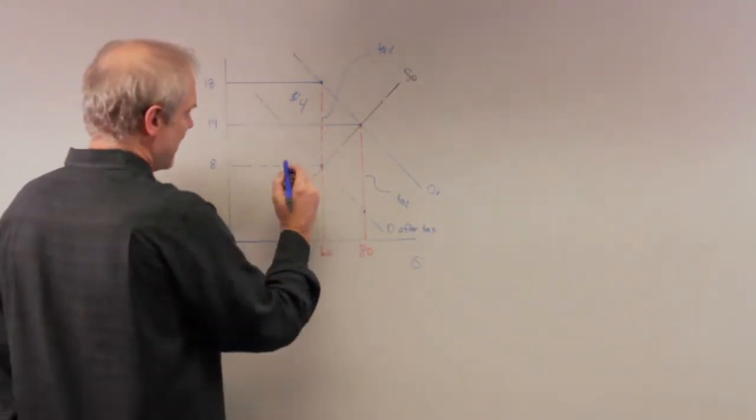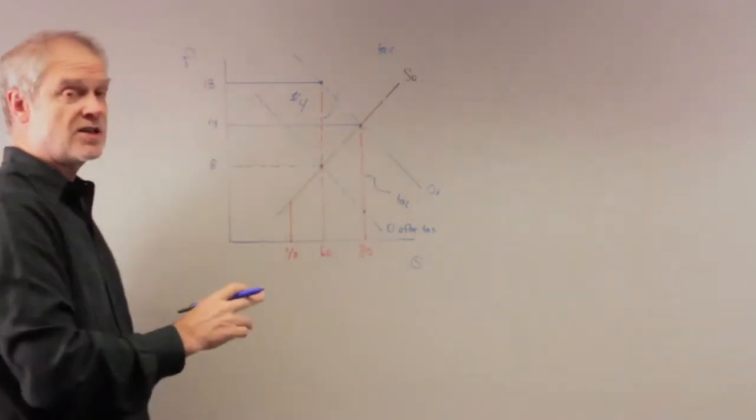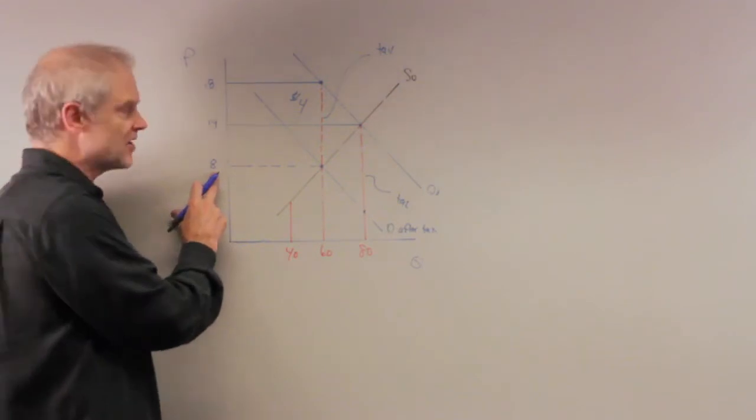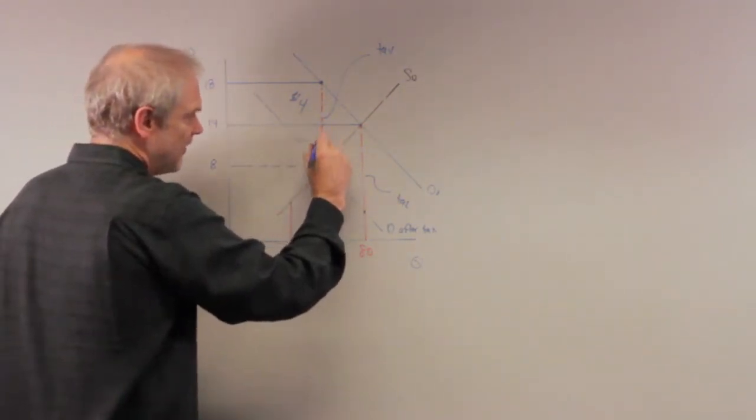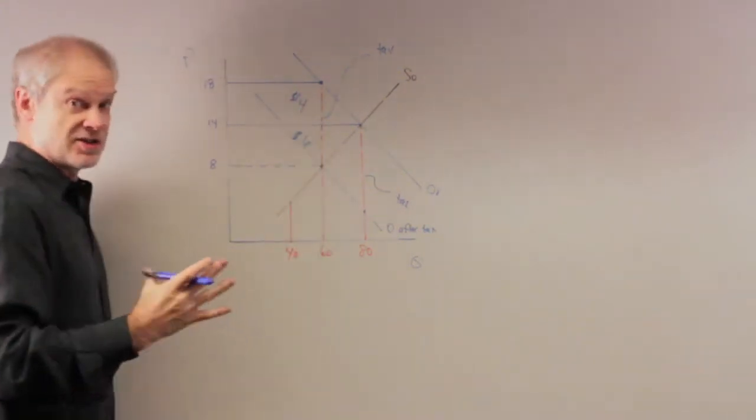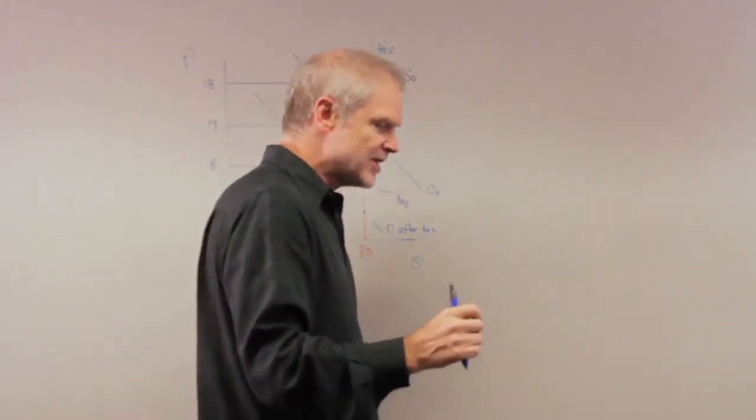How about suppliers? They were receiving $14 before the tax. After the tax, they only received $8. Therefore, they've lost $6 right here. $4 plus $6 is our $10 tax. But now you can see what happens.